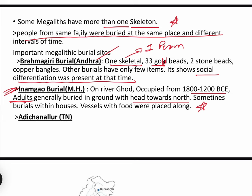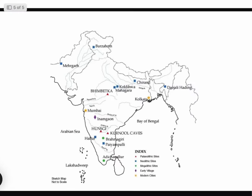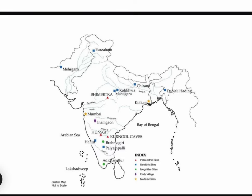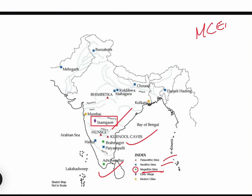There is also the site of Adichanallur in Tamil Nadu, which is prominent and shown on certain NCERT maps. On this map, megalithic sites are marked with a green dot. You can see Tamil Nadu's Adichanallur, Brahmagiri in Andhra, and Inam Gaon. This map can also be used for other periods like Paleolithic and Neolithic sites. Please study it carefully as it is directly from the NCERT.